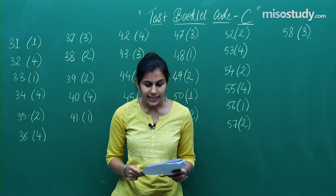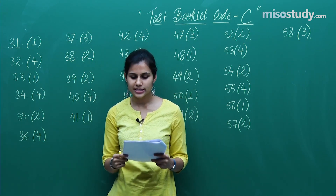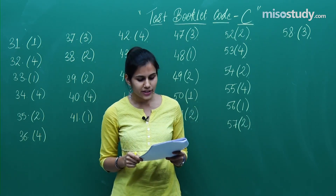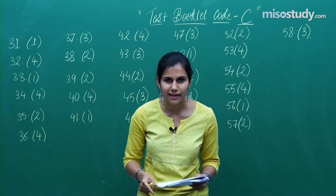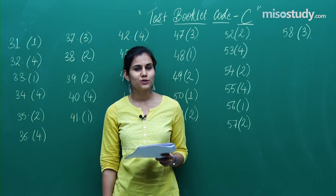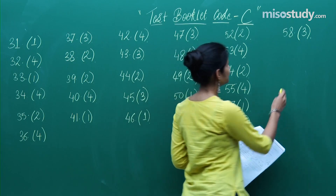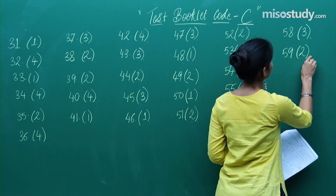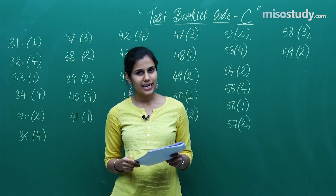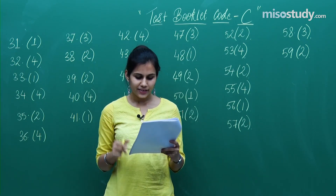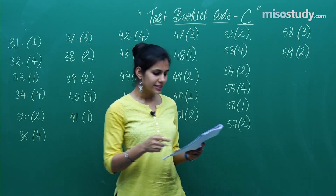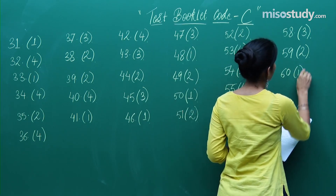Question 59 is from differential equations, 12th standard. It gives you a differential equation and asks y(π/6) equals what. The answer is -8/(9π²), which is the second option. The last question, 60, is again from 3D geometry from the 12th standard, and its answer is 1/(3√2), sitting as option number 1.